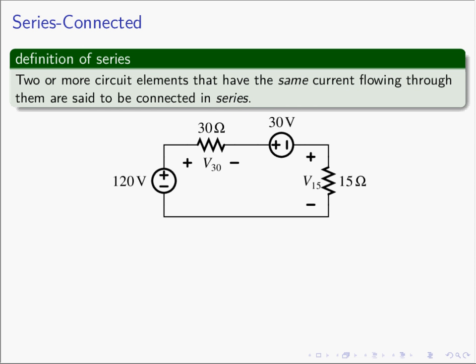The definition of series is that two or more circuit elements which have the same current flowing through them are said to be in series. In this particular circuit, any current that flows through the 120 volt source must also flow through the 30 ohm resistor. Likewise, the current through the 30 ohm resistor must also flow through the 30 volt voltage source. And similarly, if the current flows through the 30 volt source it must also flow through the 15 ohm resistor. So all four of these circuit elements are in series because the same current flows through them.